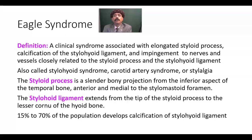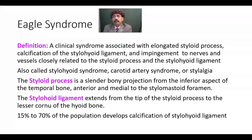What is Eagle syndrome? This is a clinical syndrome associated with elongated styloid process, calcification of the stylohyoid ligament, and impingement to nerves — especially the cranial nerves like the 5th, 7th, 9th, and 10th cranial nerves — and vessels such as the external carotid artery and internal carotid artery, which are closely related to the styloid process and the stylohyoid ligament.